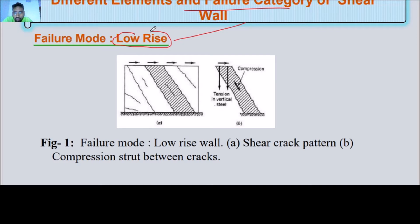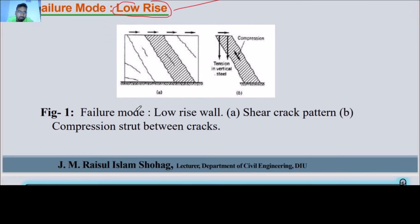We will try to identify these two failure modes. First, we can see Figure No. 1 — a low-rise wall. You can see some cracks in the diagonal, which is a shear crack pattern.